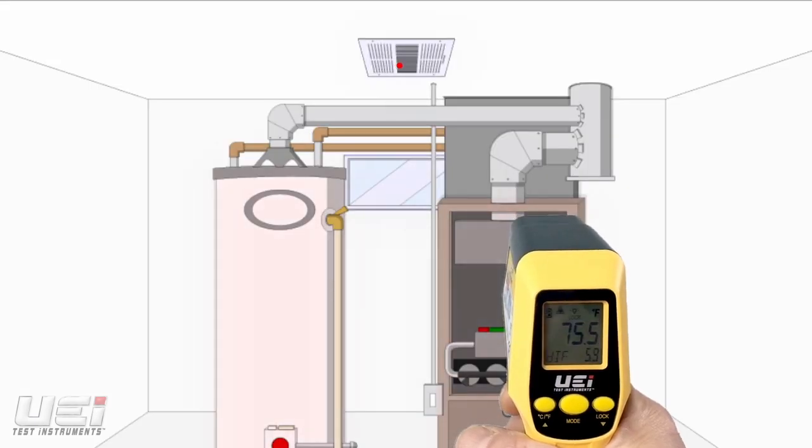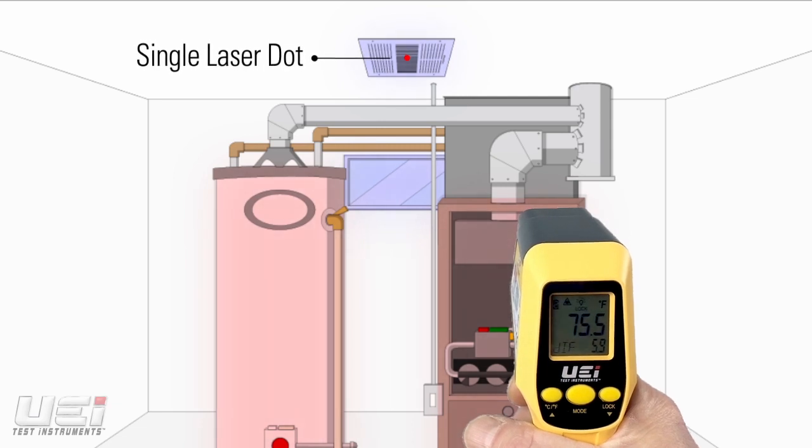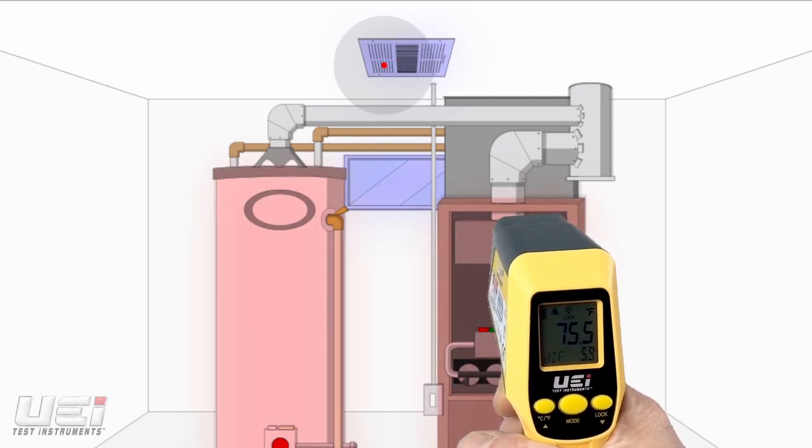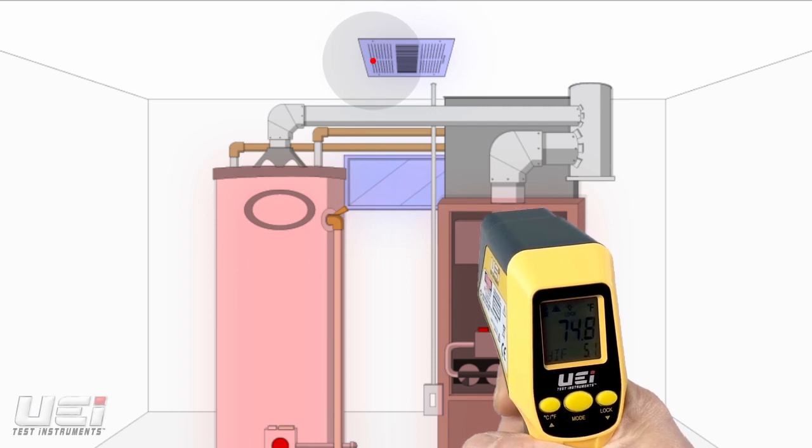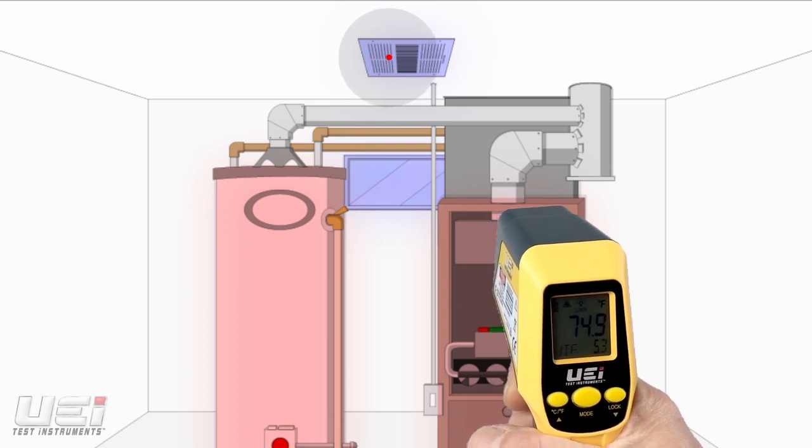Traditionally, infrared thermometers use a single laser dot to indicate the center of the spot being measured. Unfortunately, this leads the user to guess where the measuring spot's diameter is and what surrounding elements are being included in affecting the temperature readings.